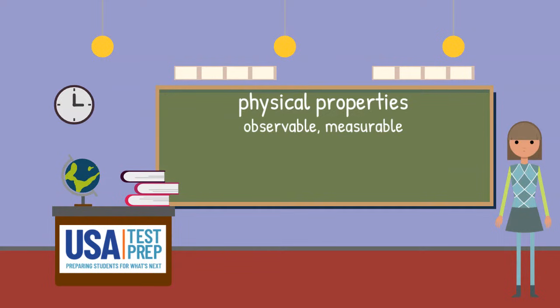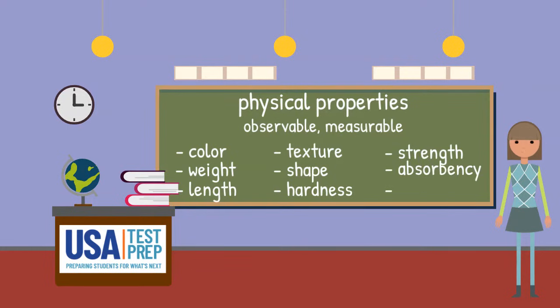Some examples of physical properties include color, weight, length, texture, shape, hardness, strength, absorbency, and flexibility.